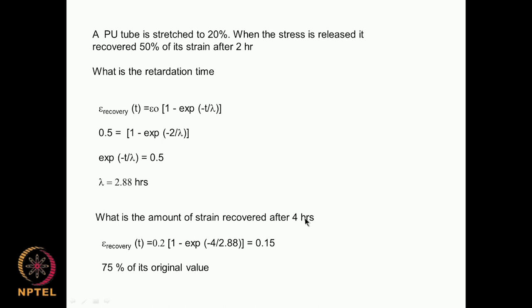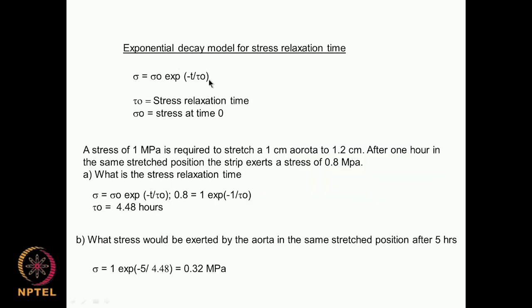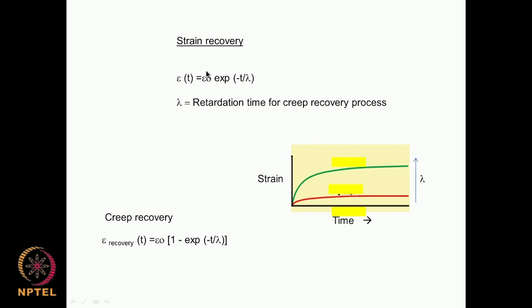What is the amount of strain recovered after 4 hours? We put time as 4, use the known lambda, and calculate that it recovered 75 percent of the original value. So we have two different types of equation: one is stress relaxation — how stress gets reduced as a function of time exponentially, with tau-naught as the stress relaxation time. The other is strain recovery — how strain gets recovered from its initial value epsilon-naught, with lambda as the retardation time or creep recovery time. These stress relaxation and creep recovery properties are very important especially in biological settings because most materials in the body are viscoelastic.